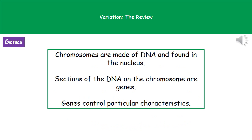Inside the nucleus of any of our cells, we have structures called chromosomes, and chromosomes are made up of DNA. Each chromosome can be divided into little sections, and those sections of DNA are the genes. Our genes control a certain characteristic — you'll have a gene for eye colour, a gene for hair colour, and so on.